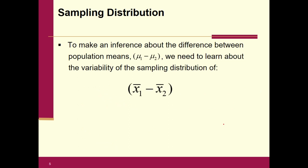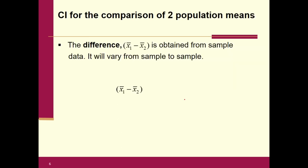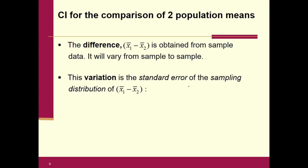What we're going to do is make an inference about the difference between population means. By doing the subtraction between the two, you're actually comparing the two. Since x-bar one minus x-bar two is a random variable, it will vary from sample to sample, so we need to measure that variation — we'll calculate the standard error of the sampling distribution of x-bar one minus x-bar two.